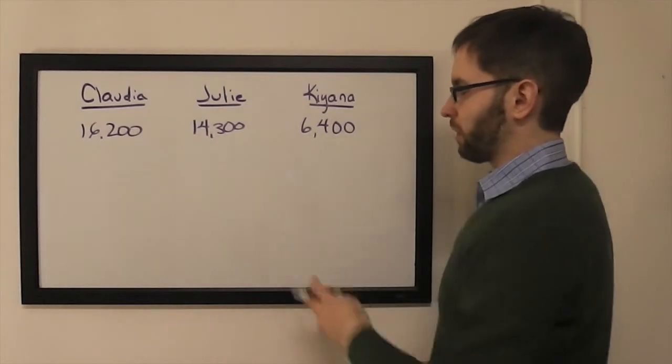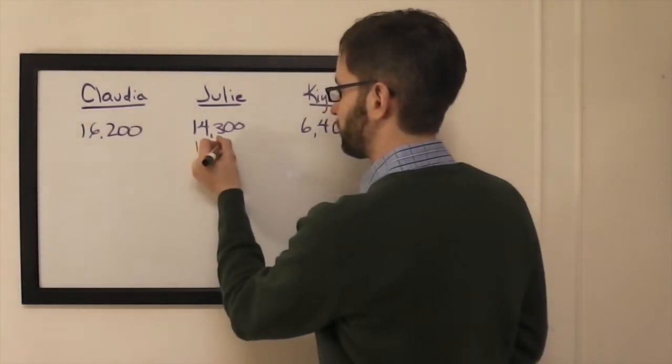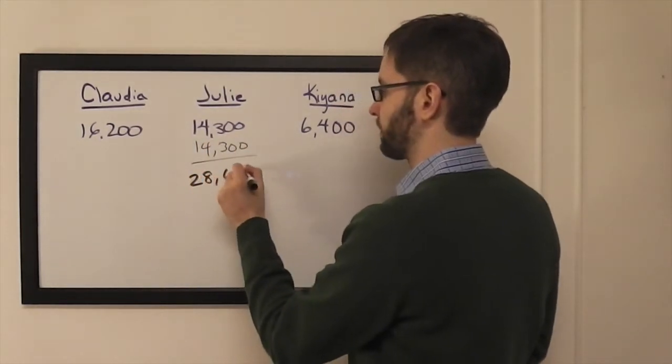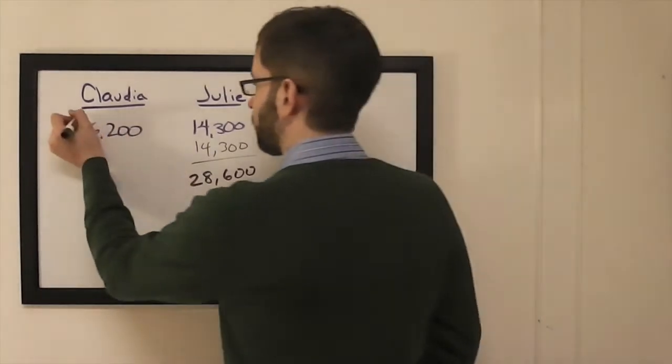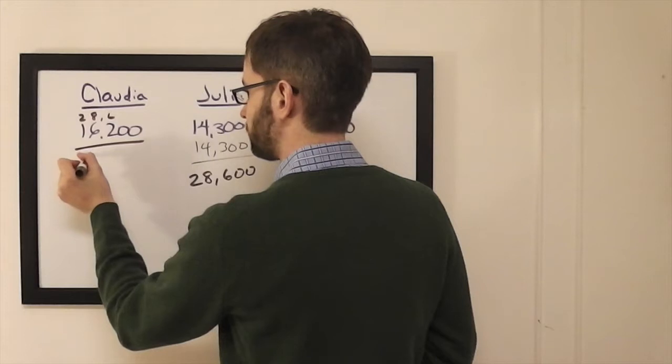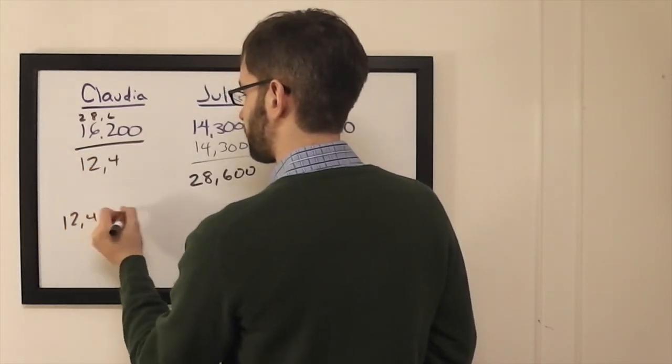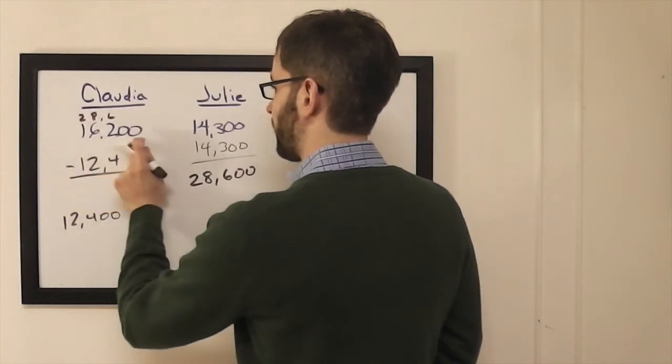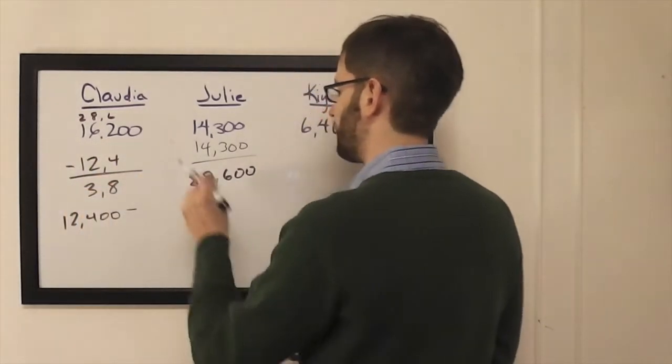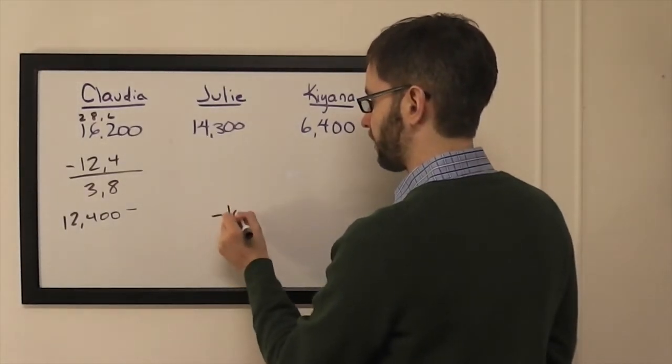So we'll start, as always, with what happens if Julie, our second-place player, wagers everything and doubles her score. Assuming she gets it right, she'll have 28,600. So Claudia, to cover this, will have to wager 12,400. Should she miss with that wager, she will be left with 3,800. So to stay above that, Julie can wager up to 10,500.